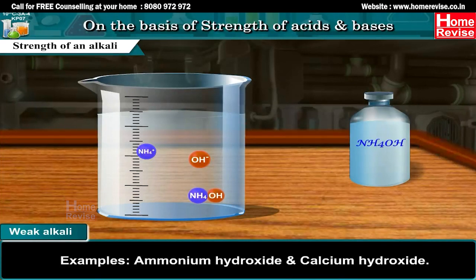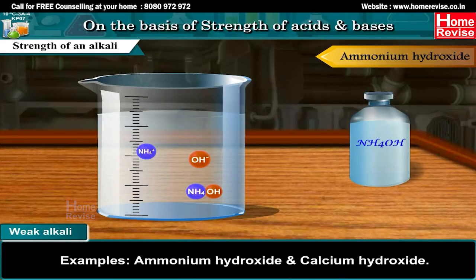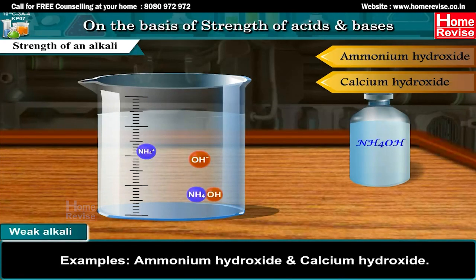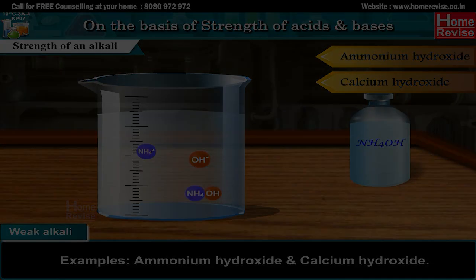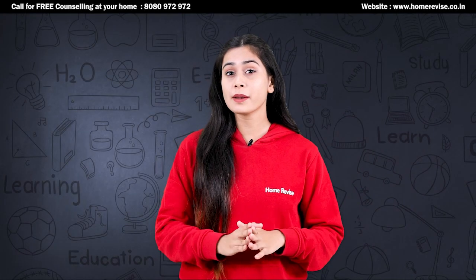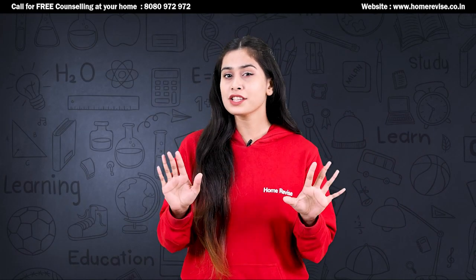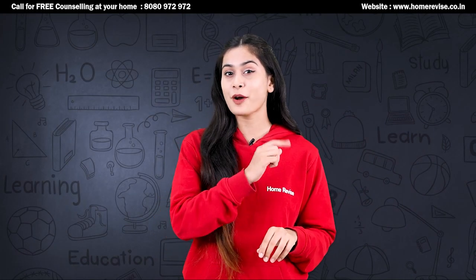Examples of weak alkalis: ammonium hydroxide and calcium hydroxide.